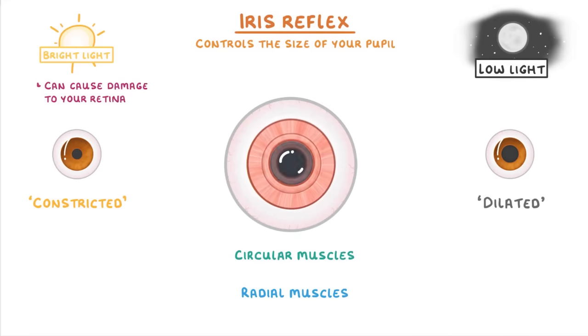In order to make the pupil smaller in bright light, the circular muscles contract, squeezing the pupil smaller. And the radial muscles have to be relaxed so that they can be stretched longer.